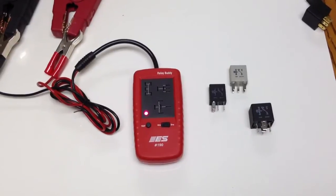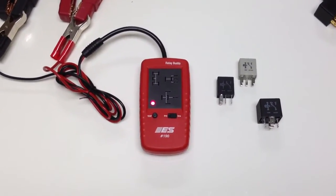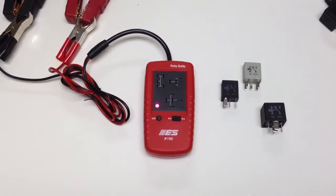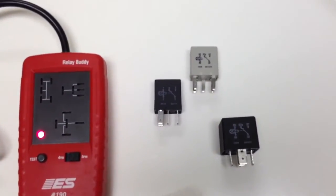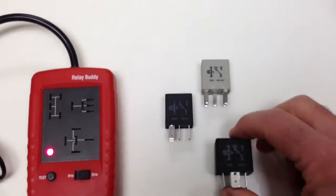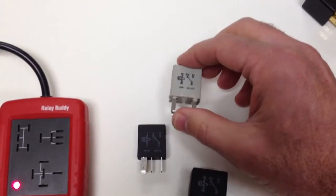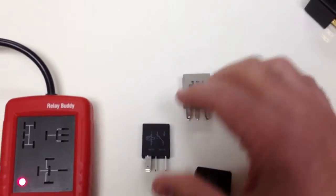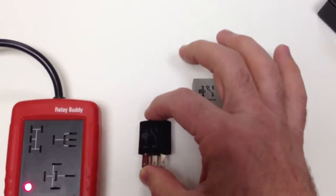Relay Buddy is designed to test the three most popular, most common automotive relays that you're going to see under the hood at the fuse panel. You've got the Bosch style relay, the Delphi made GM and Toyota type relay, and then a lot of the Asians use this micro style relay here.